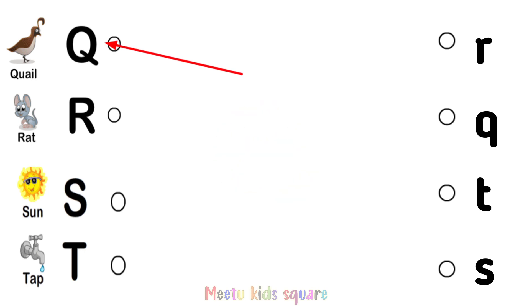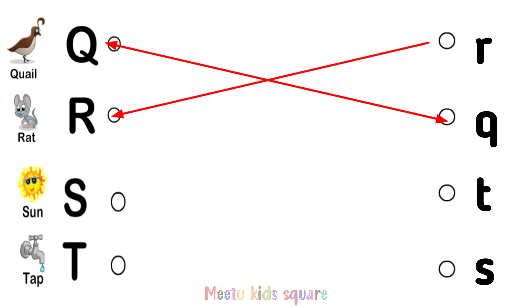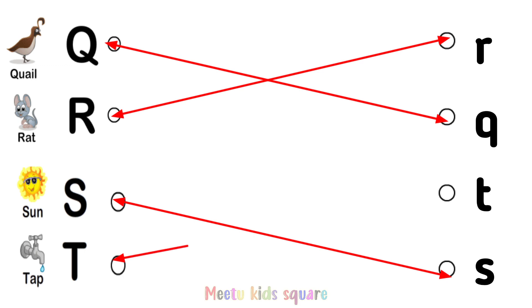Q for twin, R for rat, S for sun, T for tap.